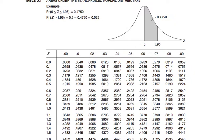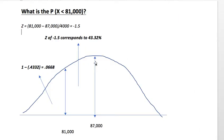So, in this case, since we've gone to the left, we would be looking at 1.5, but negative, and that gives us 43.32%. So, that area under our curve corresponds, as indicated, to 43.32%.